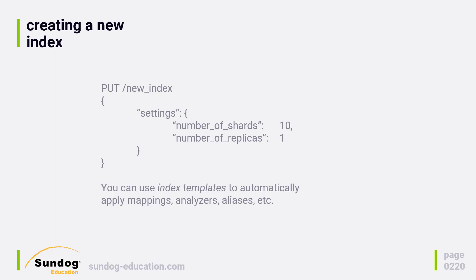Remember, the number of replicas is applied to each primary shard. So by saying number of shards 10 and number of replicas 1, that means you're going to end up with 10 primary shards and 10 replica shards — one replica for each primary. So that can be a little bit confusing at first.